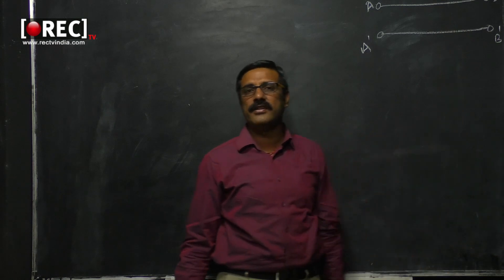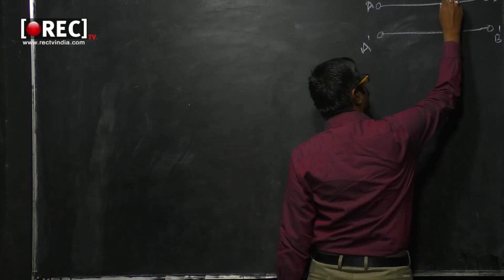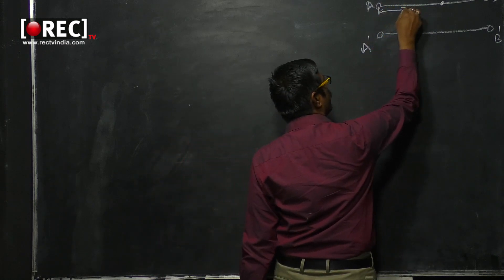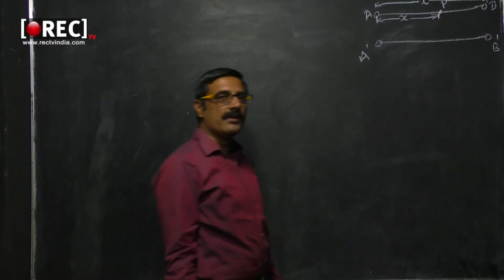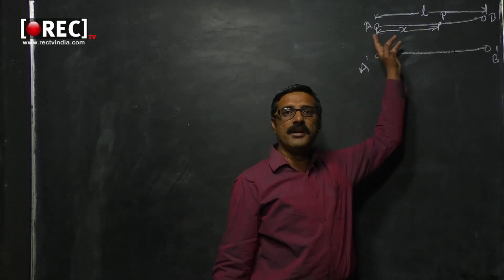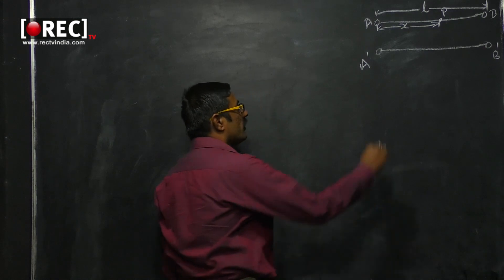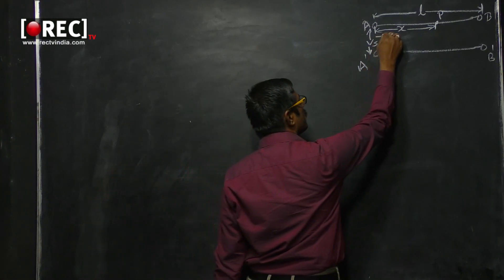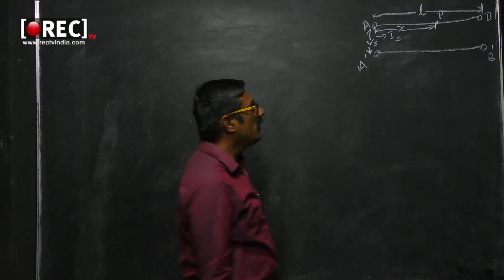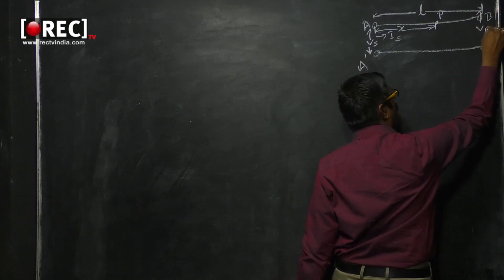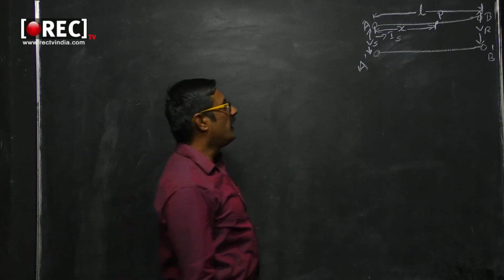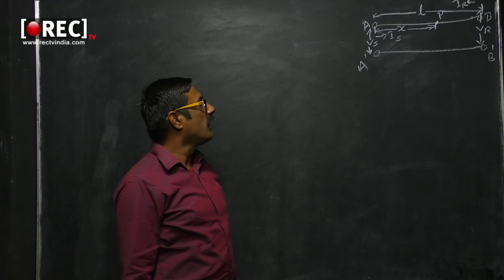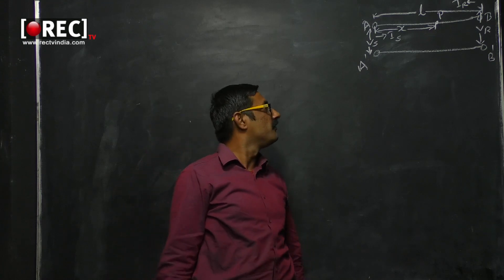By notation, the length of the transmission line is l — the distance between terminals A and B is l. Any arbitrary point P on the transmission line is located at a distance of x units from the input. So x is the distance between the input terminals and any arbitrary point P. Vs is the input or source voltage, Is is the source or input current, Vr is the receiver voltage, and Ir is the receiver or output current.